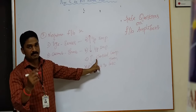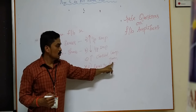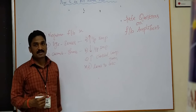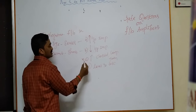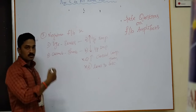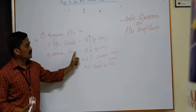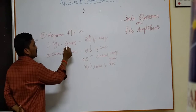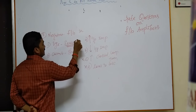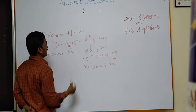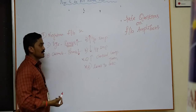In negative feedback amplifiers, the closed loop gain ABF is reducing, but input resistance is increasing, so these two will not come together. We want to match only two options. Series means input resistance is increasing, shunt means input resistance is decreasing.